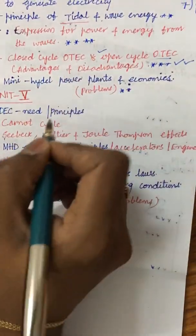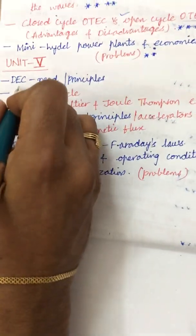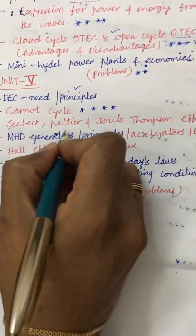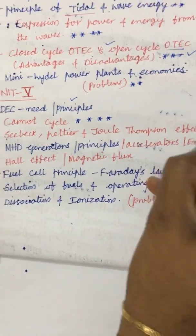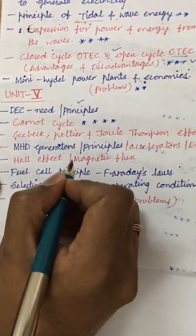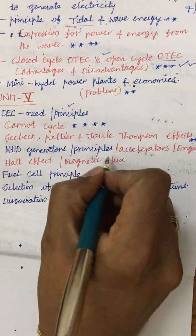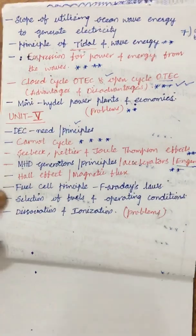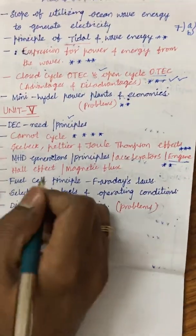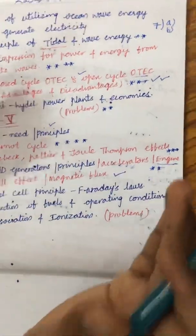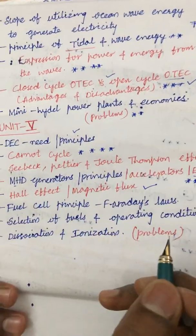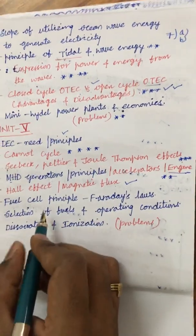Unit 5 covers direct energy conversion (DEC) — its needs, principles, and the thermodynamic cycle working. The Seebeck, Peltier, and Thomson effects are very important expected questions. Make sure to draw all diagrams in pencil. MHD generators, their principles, MHD accelerators, and MHD engines are also expected questions this semester. The Hall effect and magnetic flux are also relevant topics. Unit 5 is very lengthy and I expect only one question from it, but which part they select is uncertain due to its extensive structure.